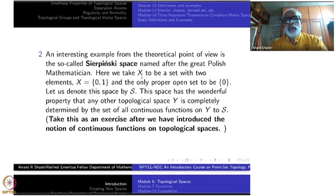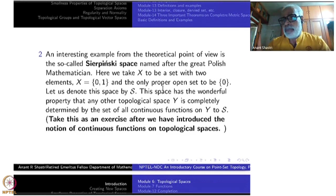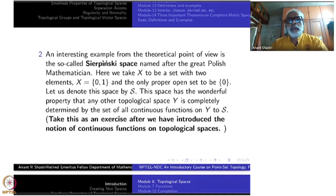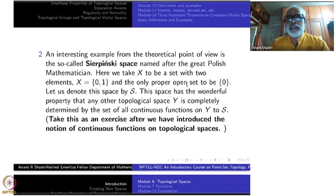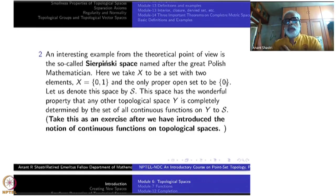Here we take X to be a set with two elements, which you can denote by {0, 1} or {−1, +1} depending on what kind of algebra you want to do. We are not going to do algebra, so take any two-element set. The only proper open set is the singleton {0}. By 'proper' I mean not equal to empty set and not equal to the whole set — so in between them there are only two candidates, {0} and {1}, and we take only {0}.